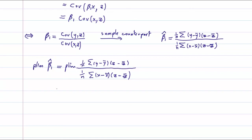So as a rule, I can write it as the plim one over n sum of y minus y bar z minus z bar. So basically the rule can simply be remembered as the plim of a ratio is the ratio of the plims.